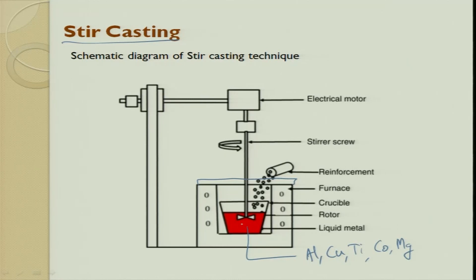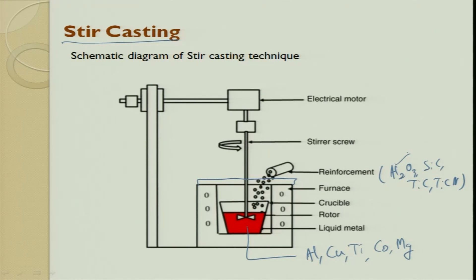At a certain viscosity, which you have already determined through experiments, you disperse the reinforcement into the metal. This can be alumina, SiC, TiC, TiCN, or a combination of two or three reinforcements mixed. The reinforcement is dispersed inside the molten metal and the stirrer keeps continuing. The stirrer's basic function is first to maintain uniform heat and then, when ceramic particles are being dispersed, to ensure they are uniformly distributed for very high mechanical properties.